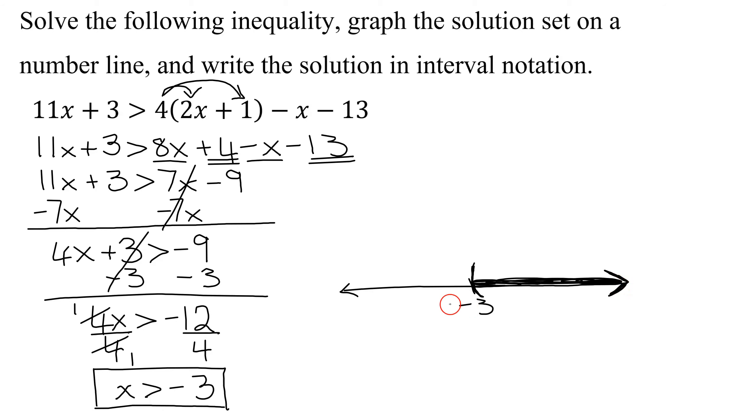And remember, the interval notation is just a concise version of the graph. Where's my interval start? Parentheses negative 3, comma, all the way up to positive infinity or just infinity. And you always use parentheses with infinity and negative infinity.